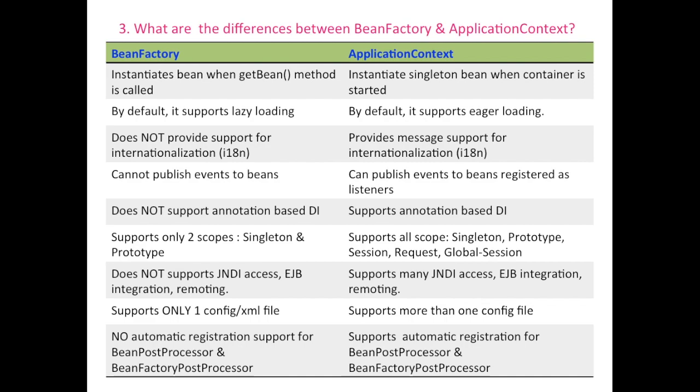Bean Factory does not support JNDI access, EJB integration, and remoting, whereas Application Context supports JNDI access, EJB integration, and remoting. Bean Factory only supports one configuration file, whereas Application Context supports more than one configuration file. In Bean Factory, there is no automatic registration support for BeanPostProcessor and BeanFactoryPostProcessor, whereas Application Context supports automatic registration for both.